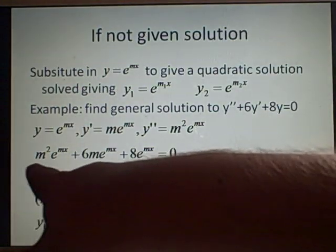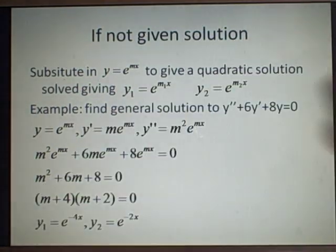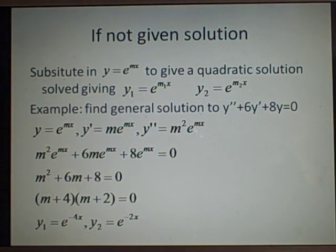Give m² + 6m + 8 = 0, we can turn this into a quadratic equation, (m + 4)(m + 2), which gives us solutions m is minus 4 and m is minus 2.